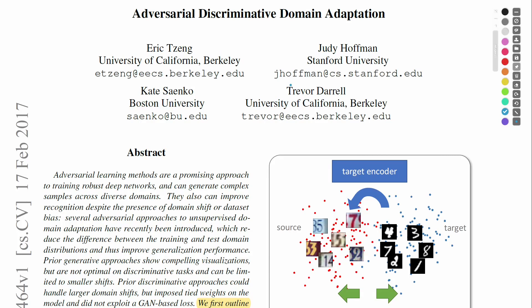The main question that this paper tries to answer is that of finding a way of transferring the knowledge of a model from a source domain to a target domain. We have a source domain with input data xs and labels ys, and a target domain t which also has input data xt, but the source domain is different from the target domain and here you have only the input data xt.